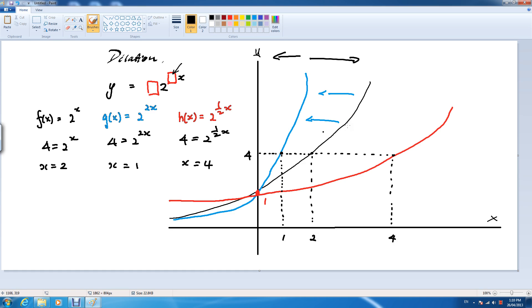As you can see, from the black line, which is f of x, and the blue line is g of x, h of x.